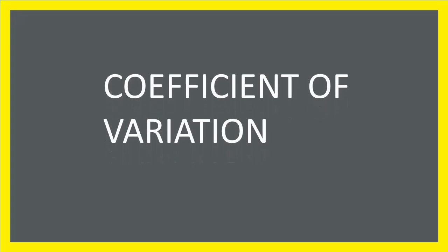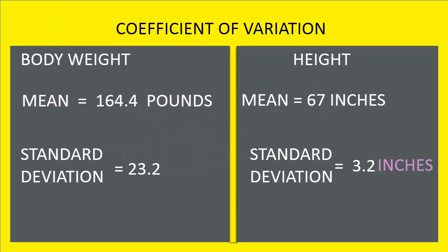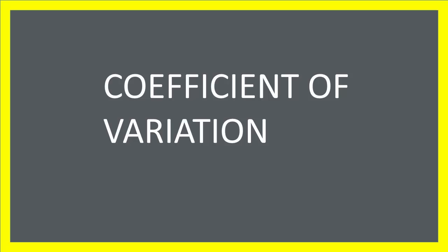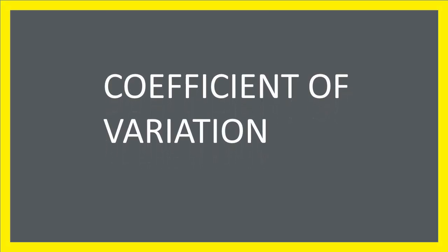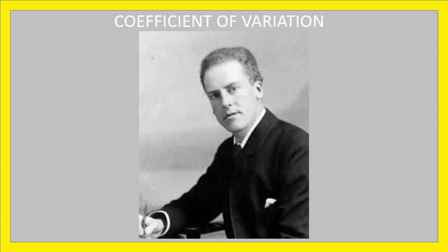In some cases, standard deviations of data sets cannot be compared as they have different units. Hence, coefficient of variation is used. This concept was suggested by one of the most prominent statisticians called Pearson.